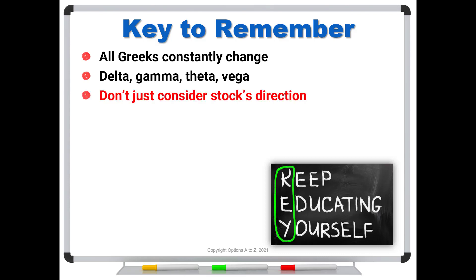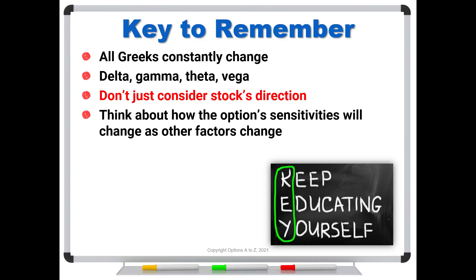And you don't want to just consider a stock's direction. You don't want to buy a call and say, I'm buying it because I think the stock is going up. We have to consider all of these other Greeks because they all change all of the time. So always think about how the option sensitivities will change as other factors change. And when you're able to do that, you can expect much better results.